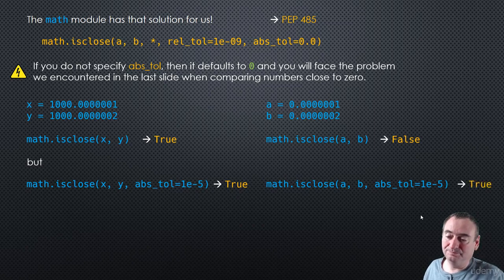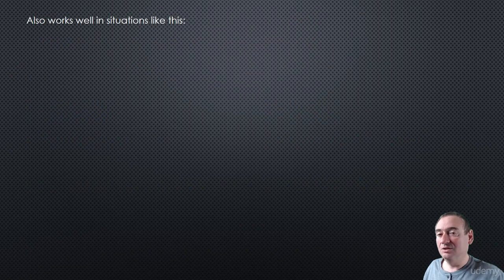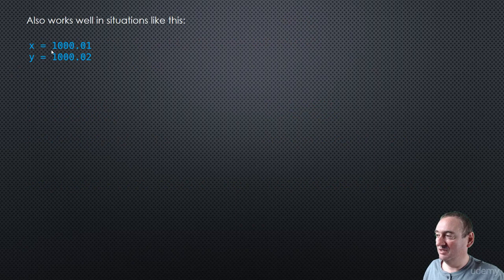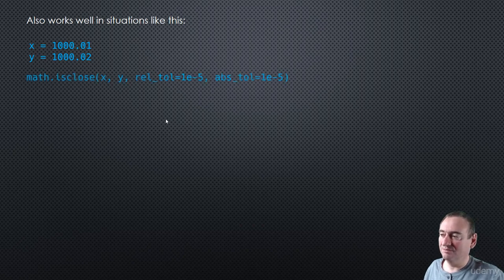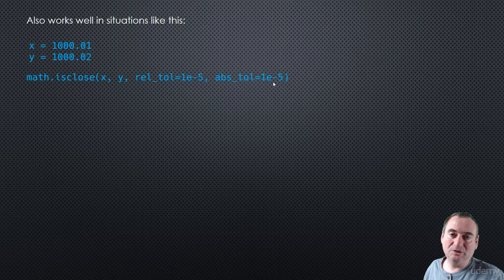So it's probably not a good idea to not specify the absolute tolerance unless you know that's what you want. You should probably always specify the absolute tolerance. So if we use an absolute tolerance of, say, 10 to the negative 5, then this evaluates to true. And using the same absolute tolerance with isclose for the other pair also evaluates to true. It also works well in situations like 1000.01 and 1000.02 — we would probably consider those numbers close to each other since it's 1000, so relatively speaking they're close.